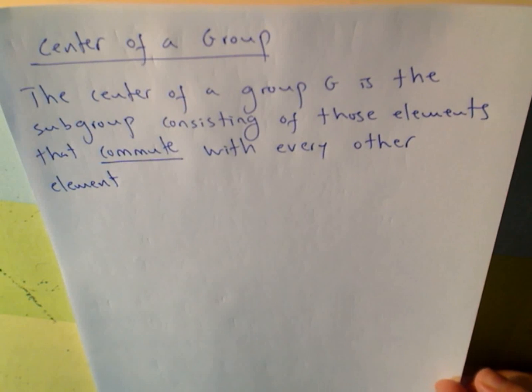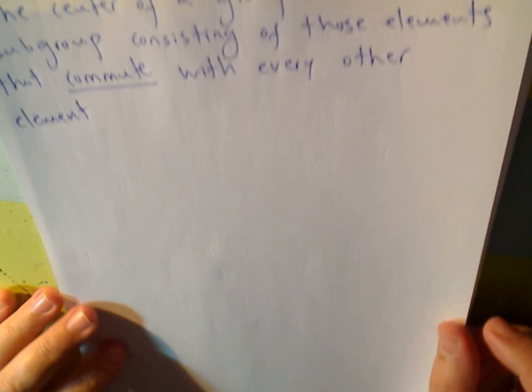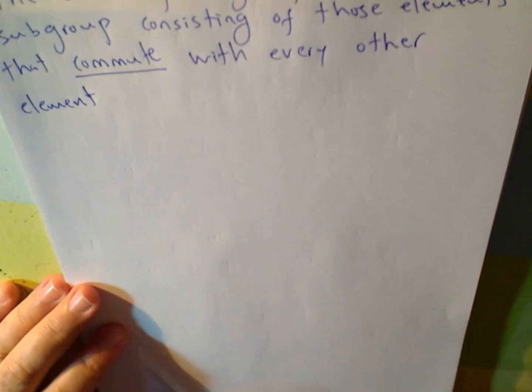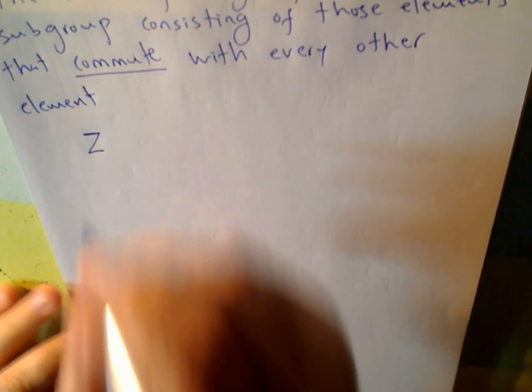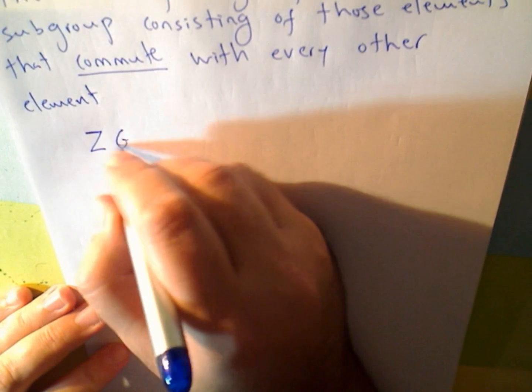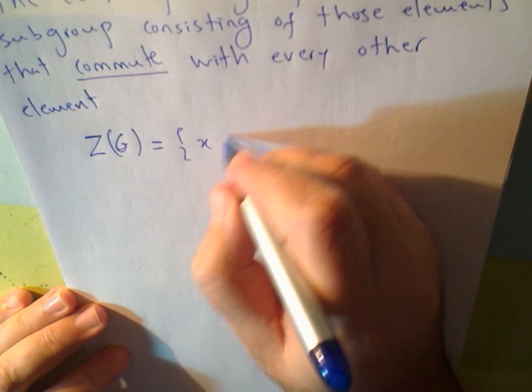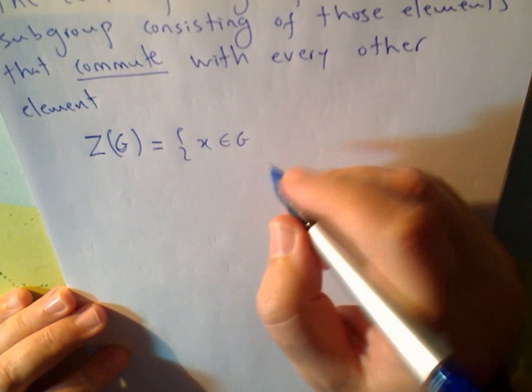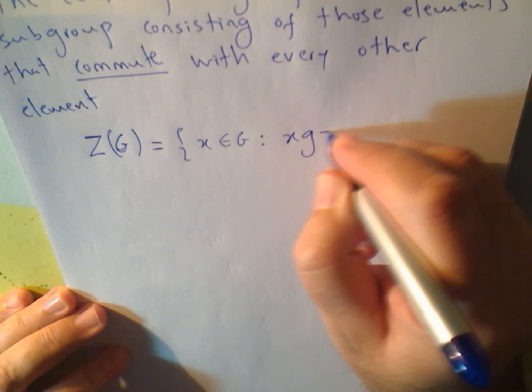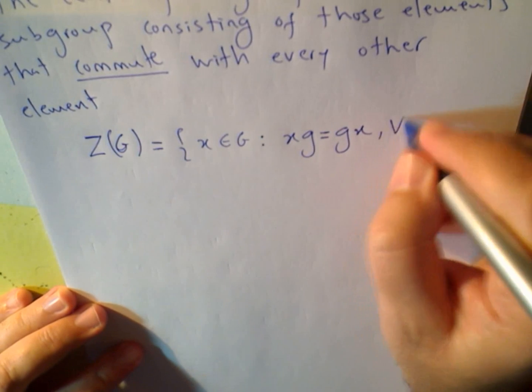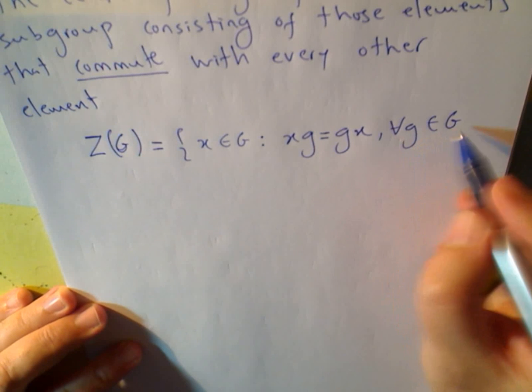The center of a group G is the subgroup consisting of those elements that commit with every other element. I'm going to write now, usually the notation is Z, Z for Zentrum, the German word. So, the center of G is the set where X in G, such that XG equals GX for all G in G, for all element G in the group G.